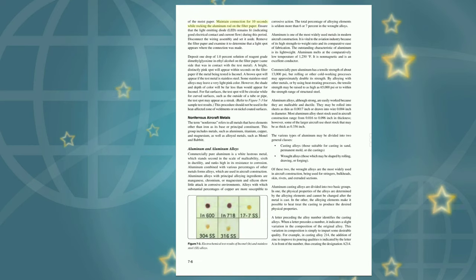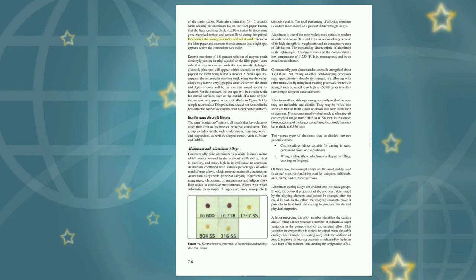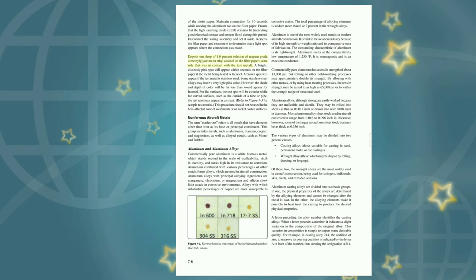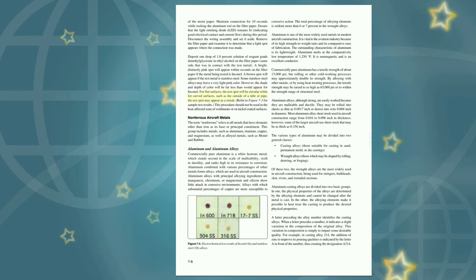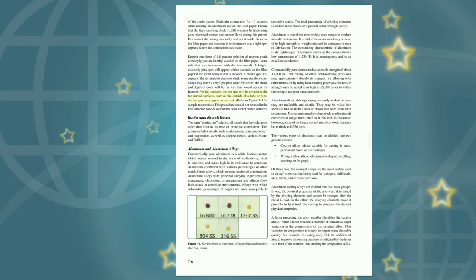Disconnect the wiring assembly and set it aside. Remove the filter paper and examine it to determine that a light spot appears where the connection was made. Deposit one drop of 1.0% solution of reagent-grade dimethylglyoxime in ethyl alcohol on the filter paper, on the same side that was in contact with the test metal. A bright, distinctly pink spot will appear within seconds if the metal being tested is Inconel. A brown spot will appear if the test metal is stainless steel. Some stainless steel alloys may leave a very light pink color; however, the shade and depth of color will be far less than would appear for Inconel. For flat surfaces, the test spot will be circular; for curved surfaces such as the outside of a tube or pipe, the test spot may appear as a streak. This procedure should not be used in the heat-affected zone of weldments or on nickel-coated surfaces.